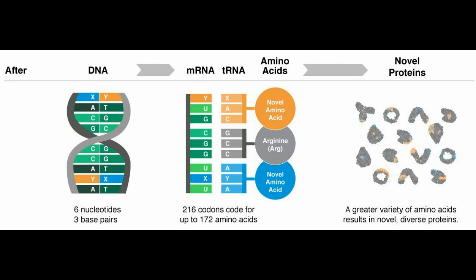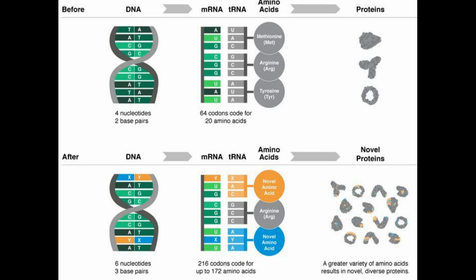Until this. Six nucleotides, three base pairs, adding X and Y, which gives you 216 codons for up to 172 amino acids, which produce all these crazy novel proteins. A greater variety of amino acids results in novel, diverse proteins. There's the before and after.